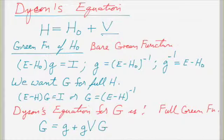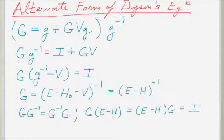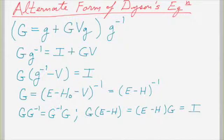The normal form of Dyson's equation is G = g + g V G. But there's also an alternative form where on the right-hand side you reverse the order of the big G and the little g — we showed that's also an exact solution, making use of the fact that inverses commute. These two forms we use to derive the final form of the recursive Green's functions.